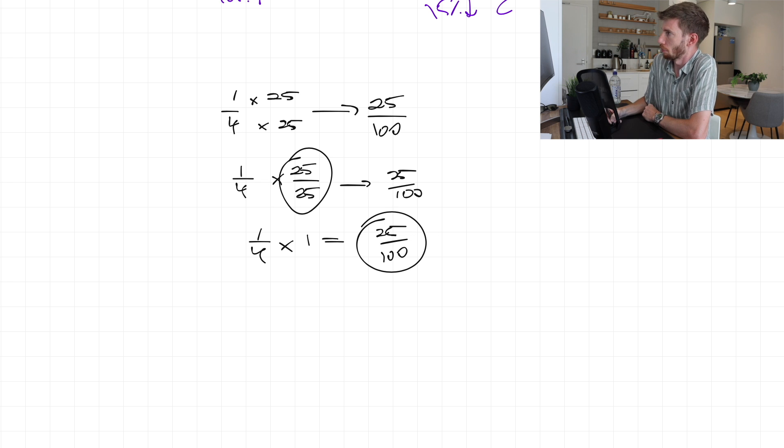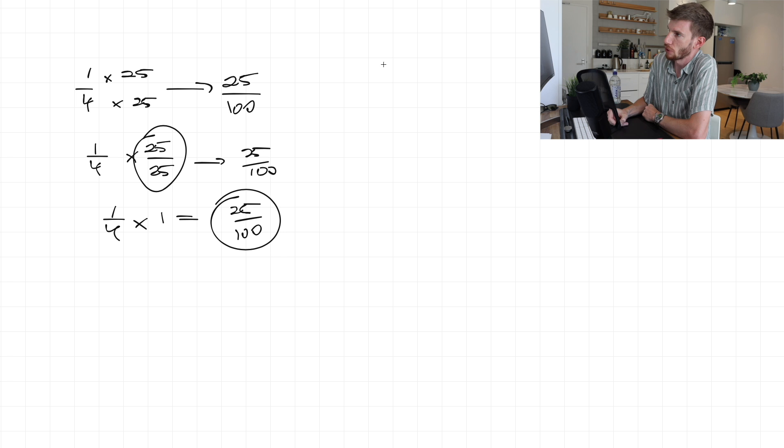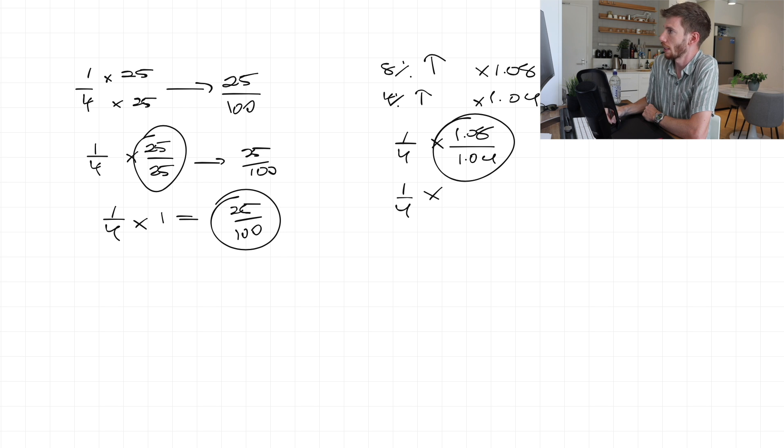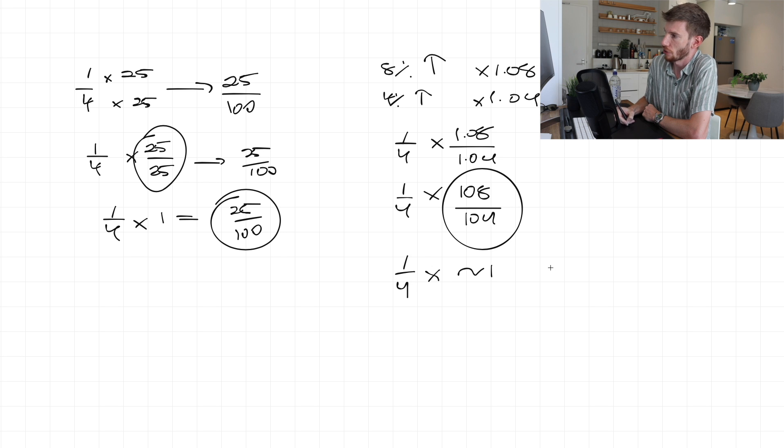So when I talk about the percentages being the same, what that means is, if we wanted, say, an 8% increase, that is the same as timesing by 1.08. If we had a 4% increase, like we had on the bottom, that's timesing by 1.04. So if I had, say, one quarter, and I'm timesing by 1.08 on the top, and 1.04 on the bottom, you'll notice that if I look at these two here, this is roughly one, right? I could do it as 108 over 104. That'd be the same thing as well, just timesing them both by 100. And you can see this here is approximately one. So therefore, I've kept approximately one.